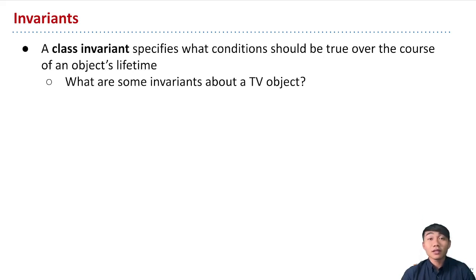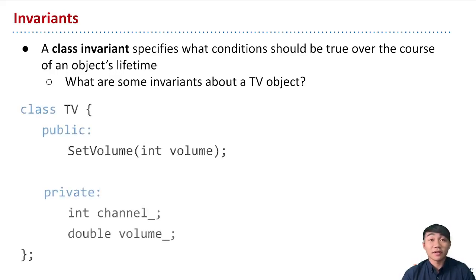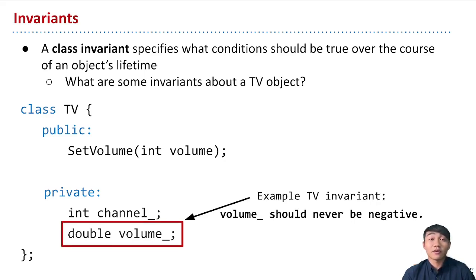To give a concrete example, let's think about some invariants that we'd want to maintain about a TV class. Looking at the member variables, you might think about invariants that relate to the range of values we'd consider valid. We have channel and volume member variables, and we might want to enforce that volume has a predefined set of valid ranges — for example, that volume can never be negative, because a negative volume doesn't make any sense. Another idea is an invariant that enforces that channels are only between one and 500, or some range of numbers. These states are what we consider to be valid for any instance of our class.